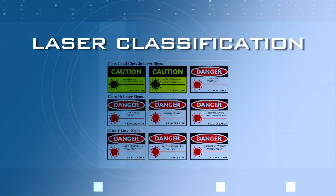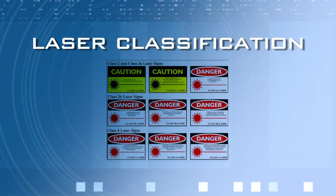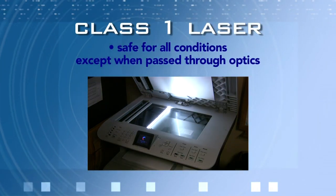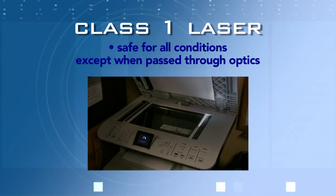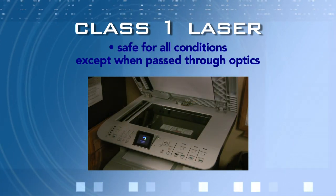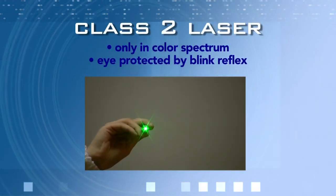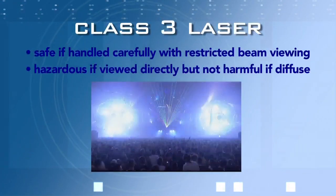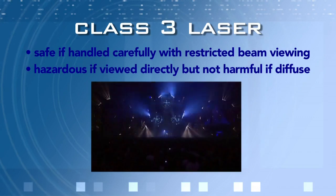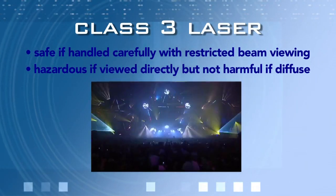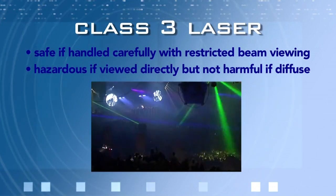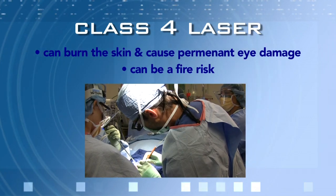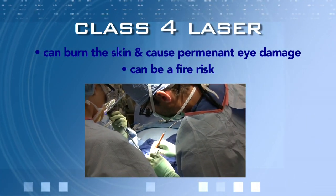Classes of lasers are defined depending on their power and wavelength, and these regulations also prescribe required safety measures. A Class I laser is safe under all conditions of normal use. A Class I M laser is safe for all conditions except when passed through magnifying optics such as microscopes and telescopes. A Class II and II M laser is safe because the blink reflex will limit exposure and only applies to visible light lasers. A Class III R laser is considered safe if handled carefully with restricted beam viewing. A Class III B laser is hazardous if the eye is exposed directly, but diffuse reflections are not harmful. Class IV lasers can burn the skin, cause permanent eye damage, and may ignite combustible materials, representing a fire risk.